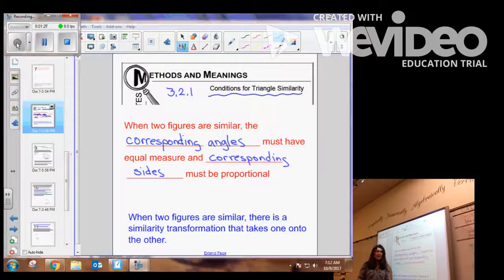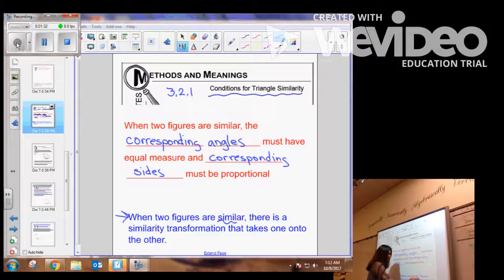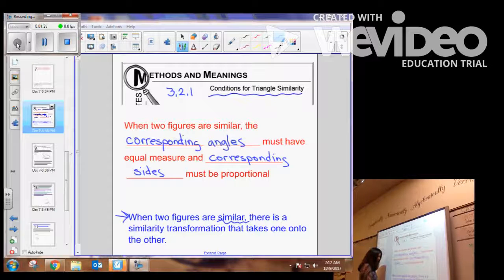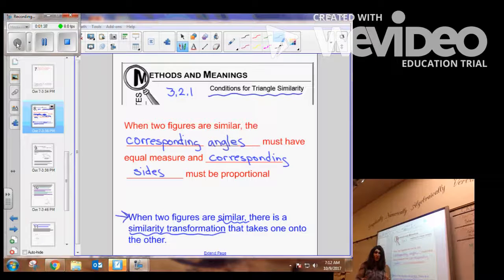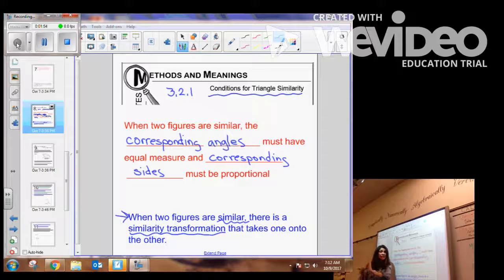Now, one other thing I want to remind you of is when two figures are similar, there is a similarity transformation or transformations that takes one onto the other. So one way visually to show that two figures are similar is that you can either do a translation, reflection, rotation, or a dilation and take one figure onto the other and create a congruent polygon. Okay, so that is another way to visually show that two figures are similar.